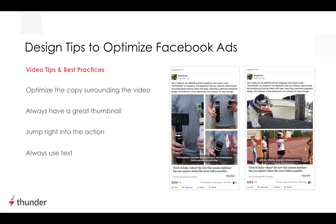For video, optimize the copy surrounding the video — test various ideas for the content, such as trying different introductions or the length of the copy, as it doesn't cost nearly as much as editing the video itself. Always have a great thumbnail: it's the very first impression of your video, so select one that offers a compelling snapshot but also drives viewers to click to learn more. Jump right into action: the first two to three seconds matters tremendously. A study by Microsoft found that the average attention span is eight seconds, which is shorter than a goldfish. A common mistake is using credits, logos, or intros at the beginning of a video. And lastly, always use text overlays — as high as 85% of Facebook videos are watched without sound, so provide captions for spoken content to make it easy for users to watch without requiring them to turn the sound on.